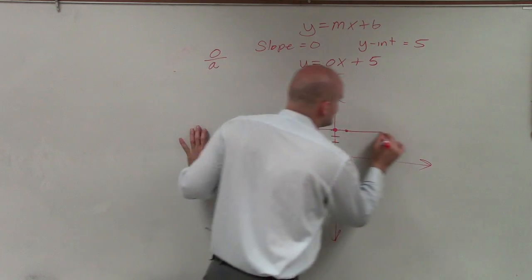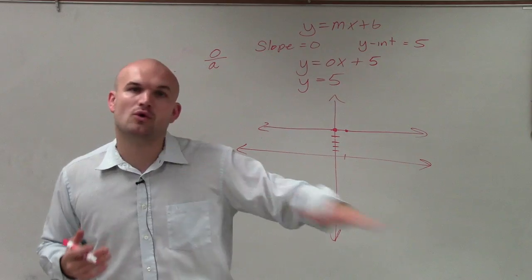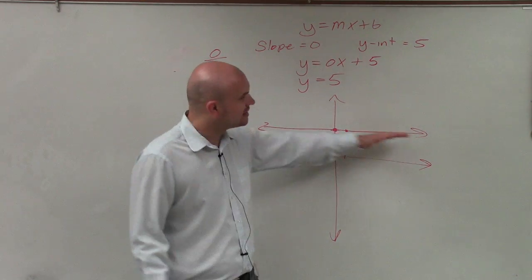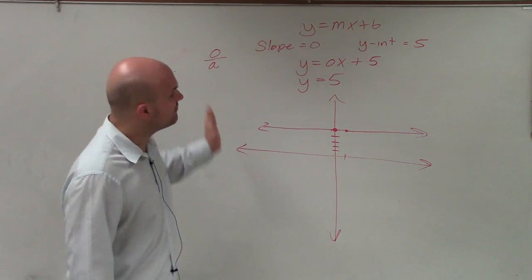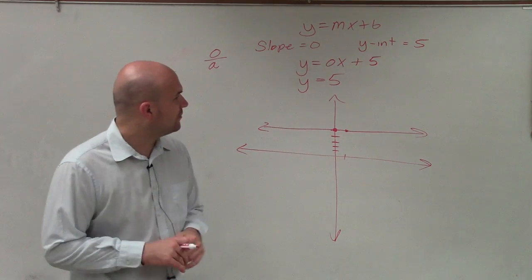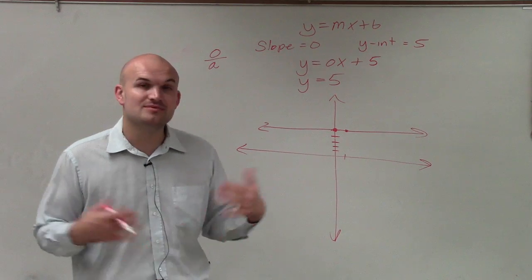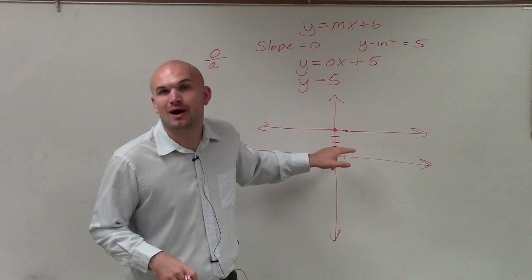The equation y = 5, or y equals anything, always produces a horizontal line. When you have a horizontal line, that represents when your slope is 0. If it had a vertical line, the slope would be undefined. But in this case, we have slope 0, so we have a horizontal line at our y-intercept of y = 5.